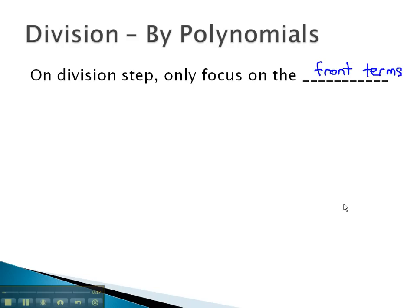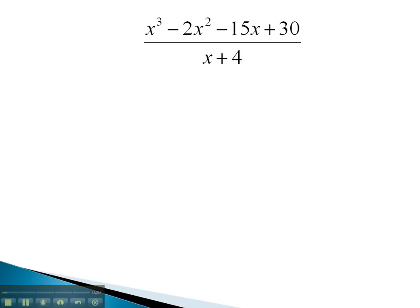Let's take a look at some examples. In this problem, we're dividing x plus 4 into the polynomial x cubed minus 2x squared minus 15x plus 30.